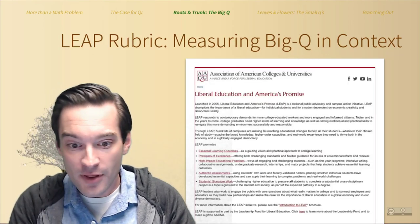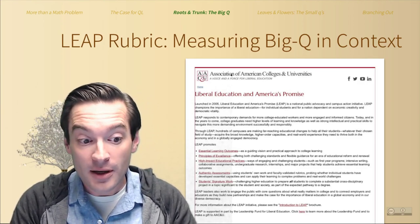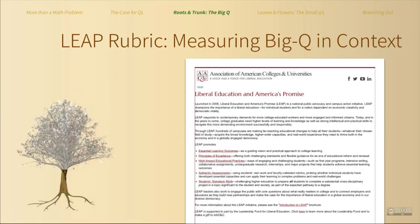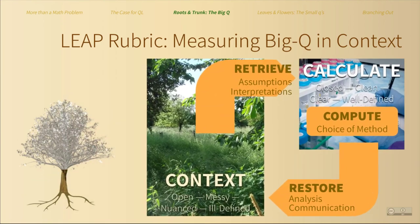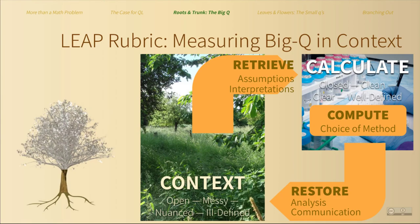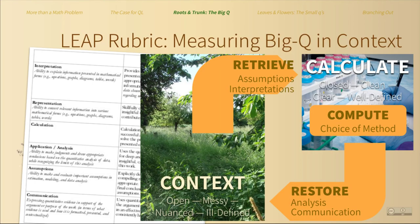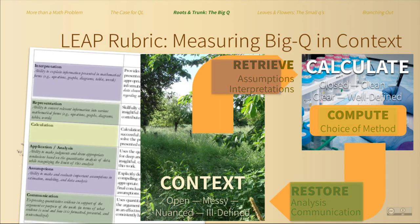As part of their LEAP project, the Association of American Colleges and Universities developed what is probably the most influential rubric for assessing big Q quantitative literacy in whichever discipline it's taught. The VALUE rubric sets an analytic scale for each of the components of quantitative literacy: the interpretations and assumptions needed to retrieve a quantitative idea from its context, the calculations and choices needed to gain an insight, and the analysis and communication needed to place that insight back into its context.